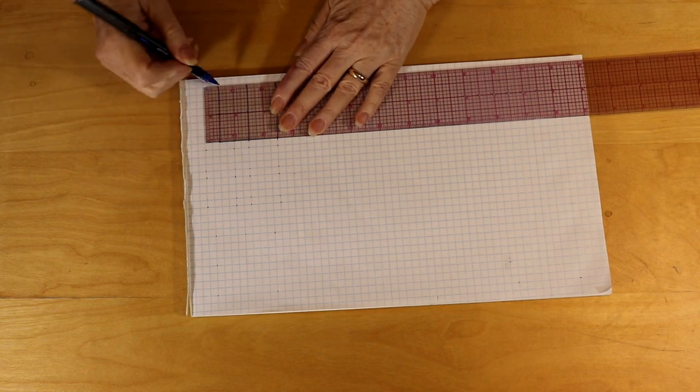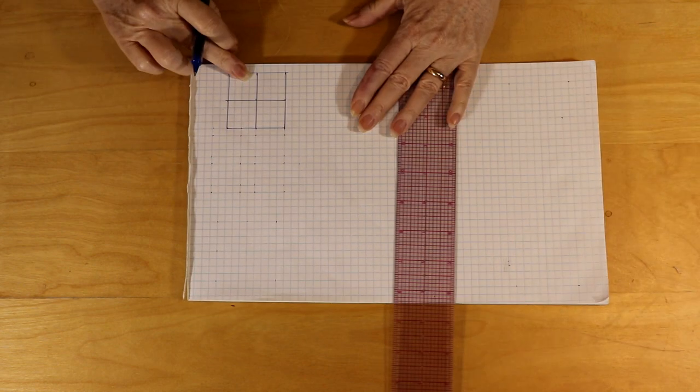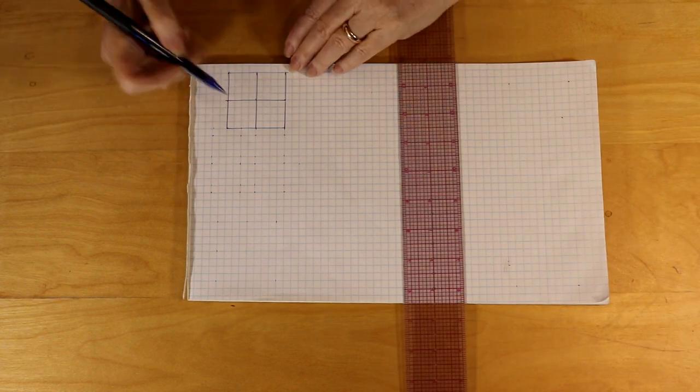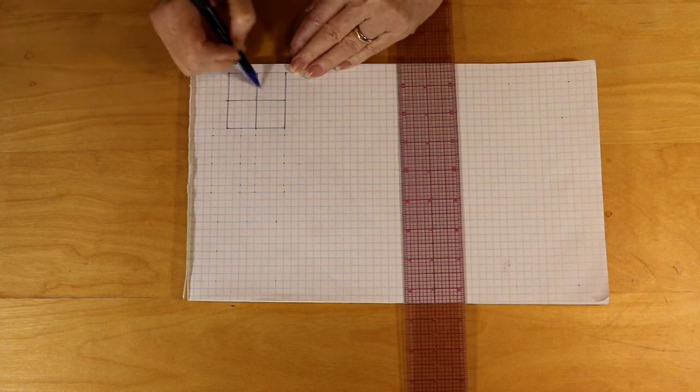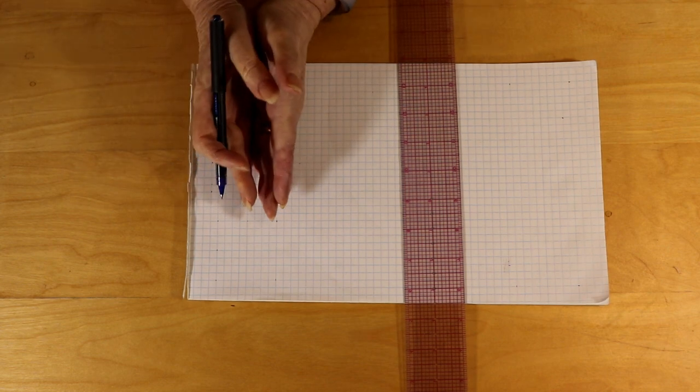You wouldn't be able to do this as a foundation paper piece by doing this, right? Because you have to have these two sewn together and these two sewn together before you can sew this line. So this creates a separation.